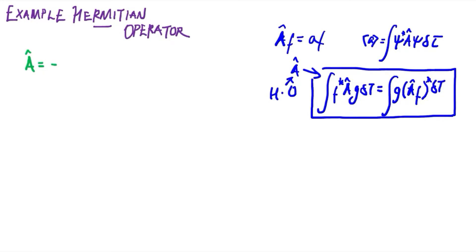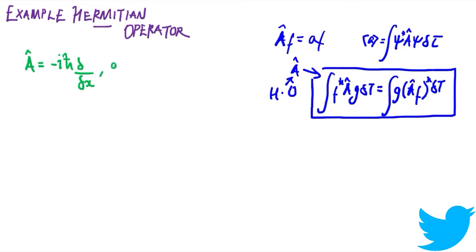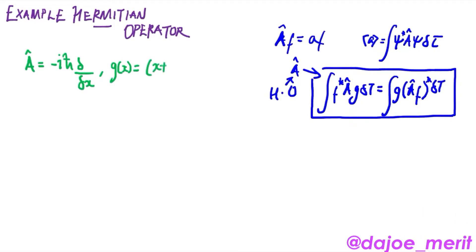In this video we'll prove that a specific operator is a Hermitian operator. The example we're looking at is the momentum operator in the x-coordinate, and we'll apply it to a well-behaved function g(x) = (x + 1) / e^(x²).